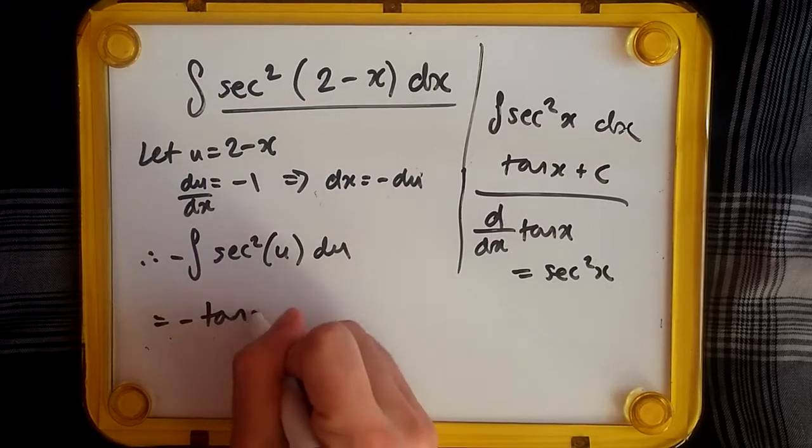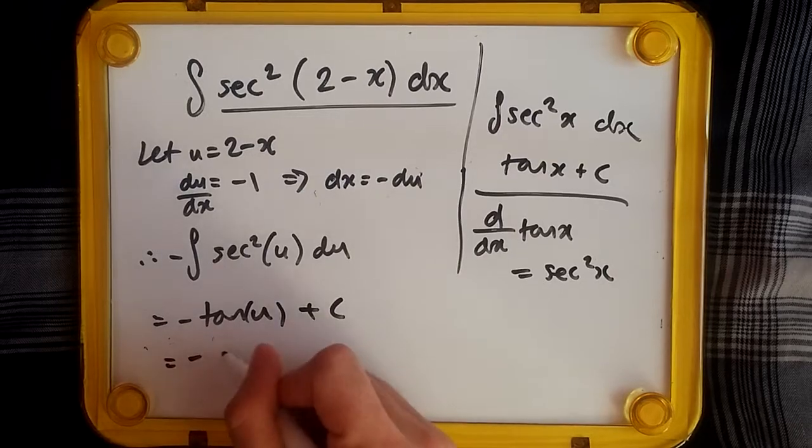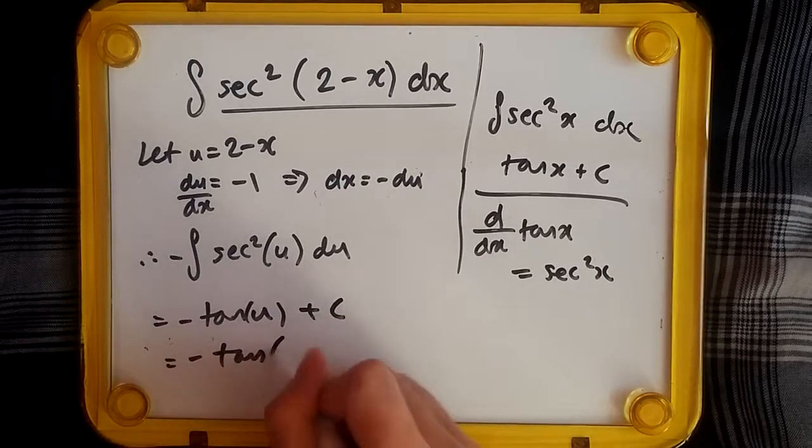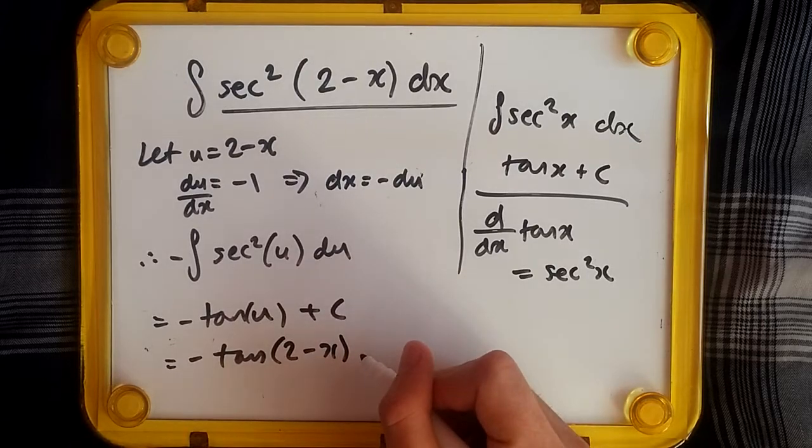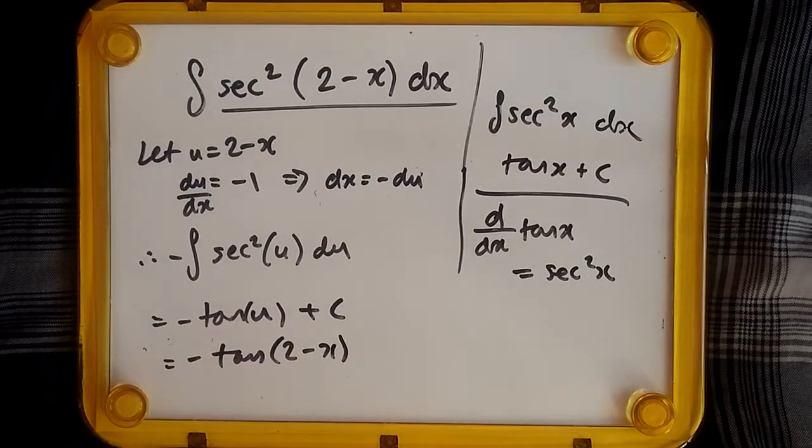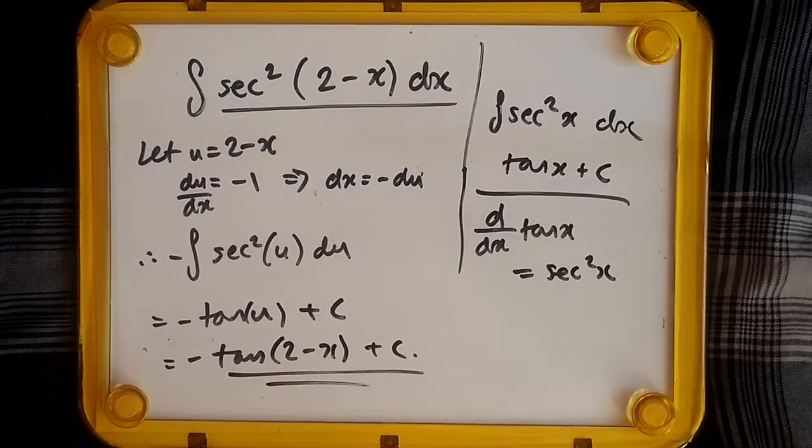And tan u, of course, is 2 minus x. So to be honest, this isn't too bad if you can remember this property and the reverse chain rule or whatever you want to call it. Then this should be no problem.